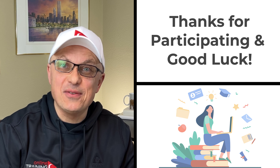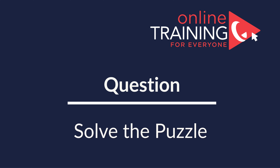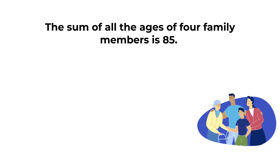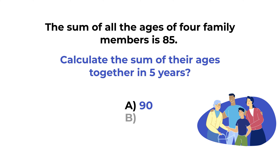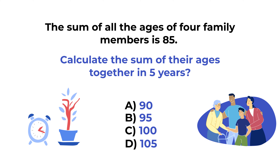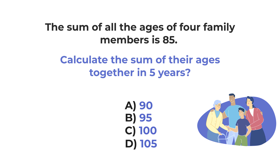Here's a puzzling question you might frequently see on the test. The sum of all the ages of four family members is 85. What would be the sum of their ages together in five years? Choices: A is 90, B is 95, C is 100, D is 105. Give yourself 20 to 30 seconds to see if you can come up with the solution.